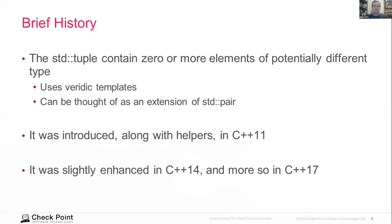So a tuple is basically zero or more elements, potentially of different types, and it can be thought of as a sort of generalization of std::pair. If a pair is just two elements in an orderly fashion, a tuple is any given number of elements, any given number but fixed elements in a particular order. And it has been done using variadic templates. It was introduced along with several helpers in C++11.